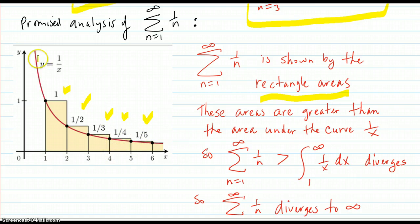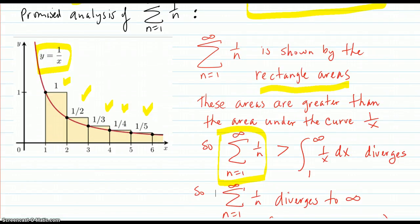Those areas of the shaded part represent this series: one plus a half plus one-third plus one-fourth plus one-fifth. But you can see that the areas there are greater than the area under the curve. The area under the curve is only this part down here. But what is that area? It's the integral from one to infinity of 1/x dx. We've already seen that it diverges.